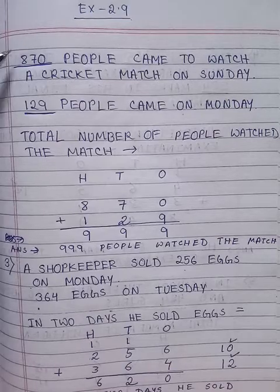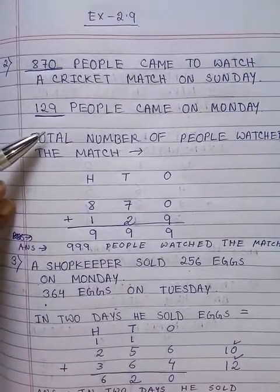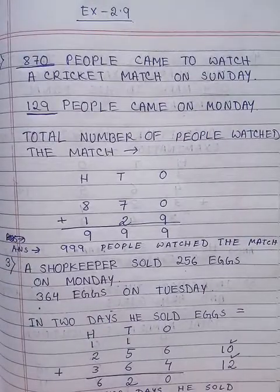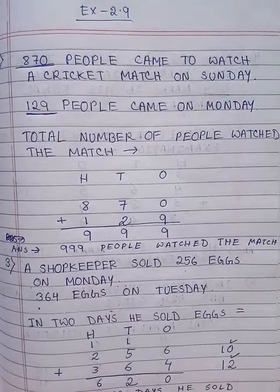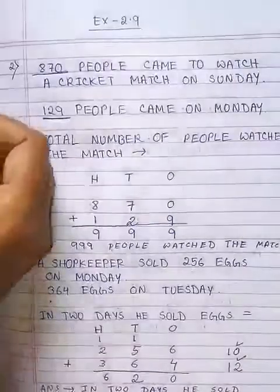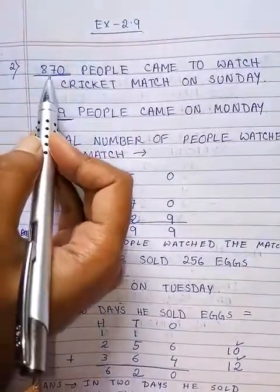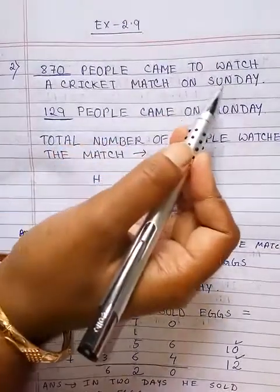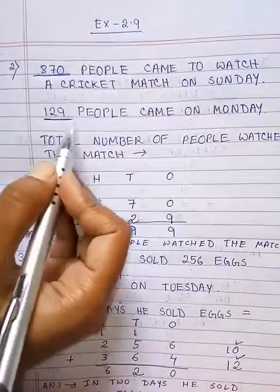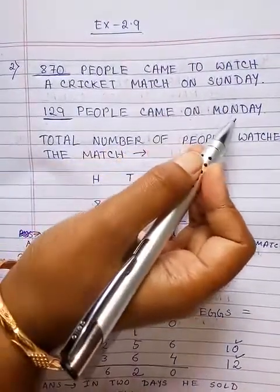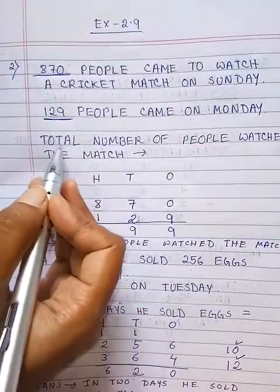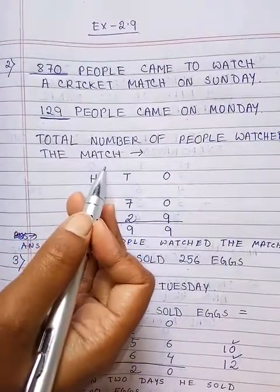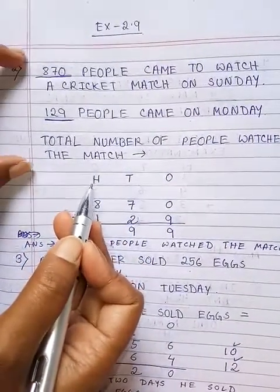In the first part I am writing the statement. Statement means the information you are getting from the question. From this question we get: first, 870 people came to watch a cricket match on Sunday; 129 people came on Monday. We have to find the total number of people who watched the match. This part is the statement.